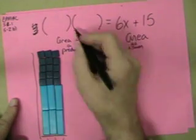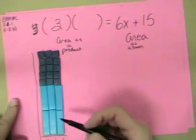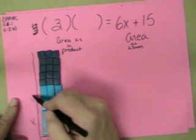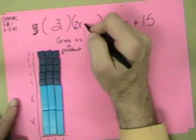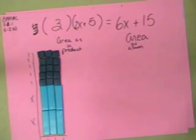This is 1, 1, 1. So one of my sides is 3. And this is going to be x, x, 1, 1, 1, 1, 1. Or 2x plus 5. Good luck.